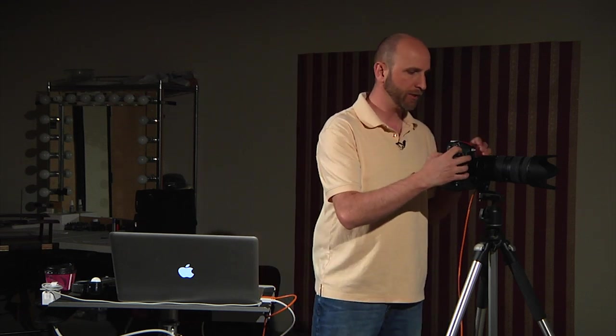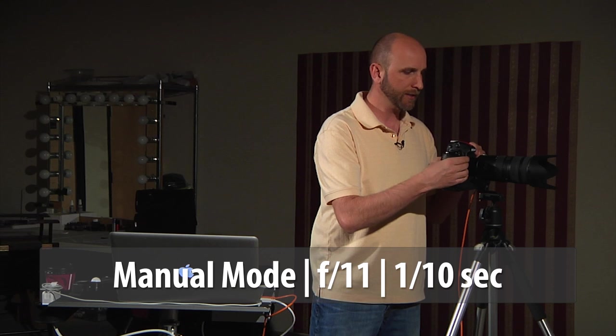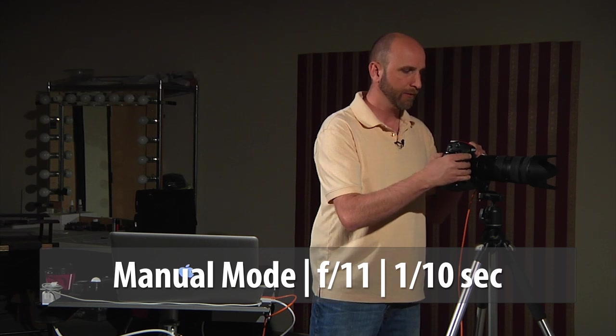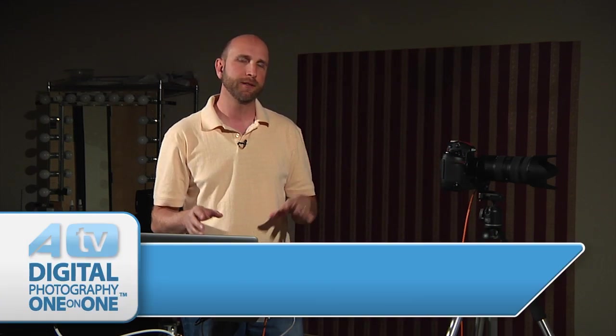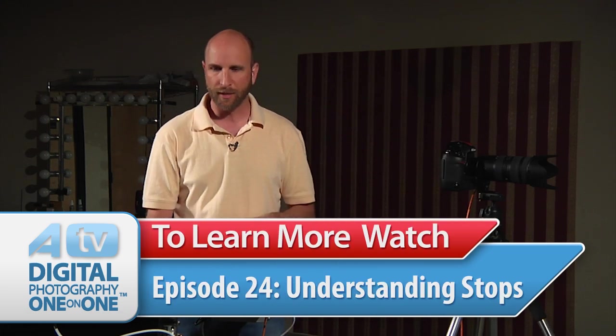I'm going to take my light meter here and I'm going to meter this right on this little target. It tells me at f11 that I need to be using 1/10th of a second. So I'm going to change this to manual mode and set this to 1/10th of a second at f11. That is one stop difference between what we did. According to our light meter, we were underexposed by a stop.